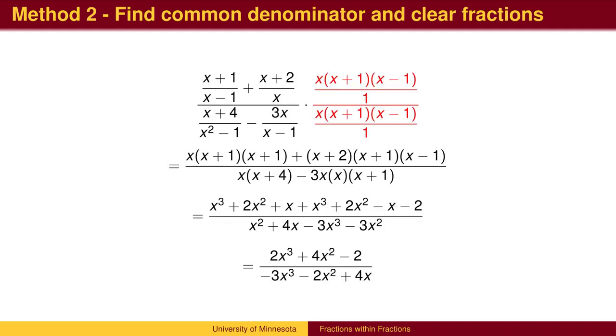A second approach is to find a common denominator across all four of the small fractions. We have denominators of x minus 1, x, and another factor of x plus 1 will appear in the difference of squares factoring of x squared minus 1. If we multiply the numerator and denominator of the large fraction by these three factors, all of the denominators of the smaller fractions will be cancelled, and we will have a fraction with only two layers.